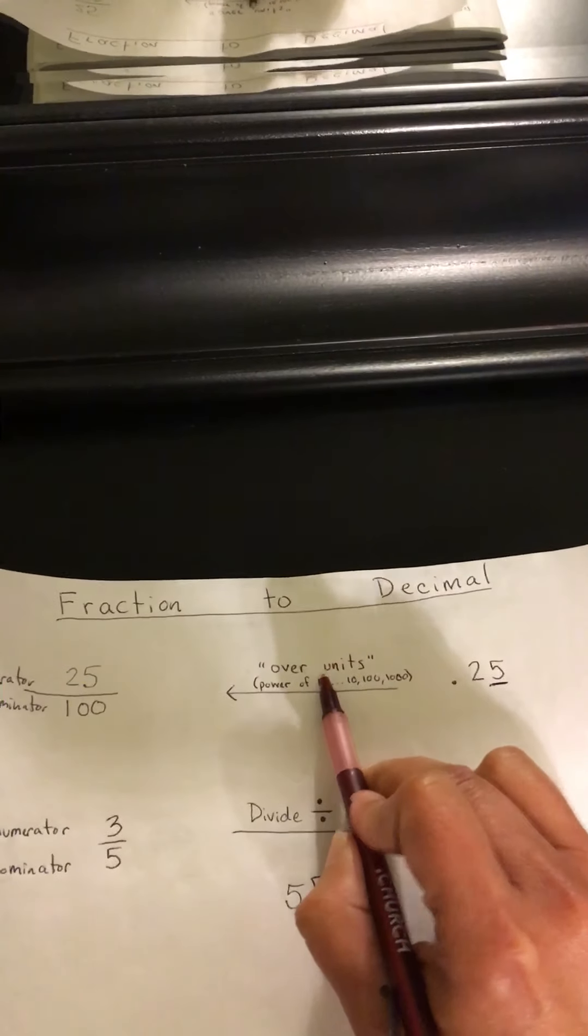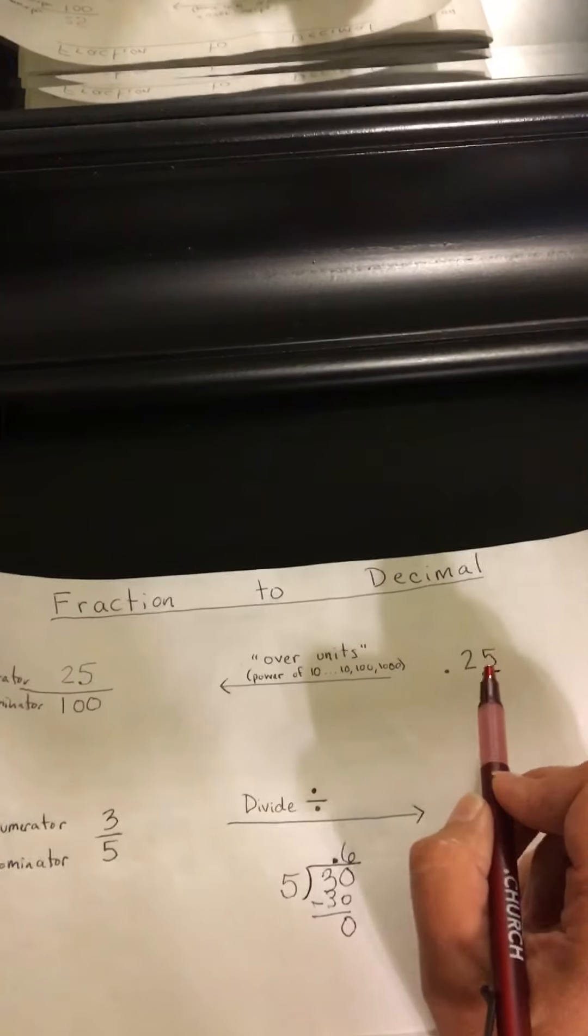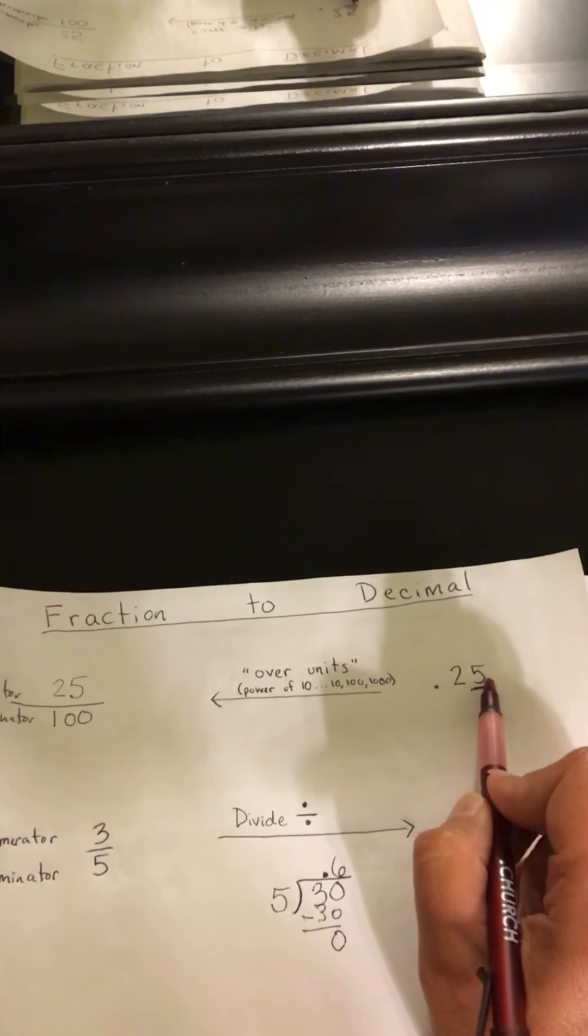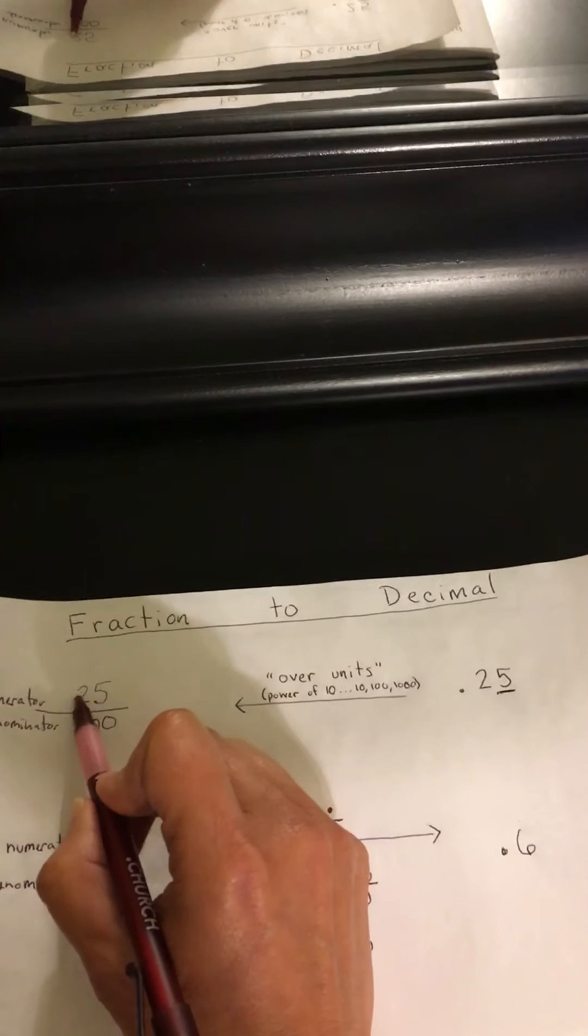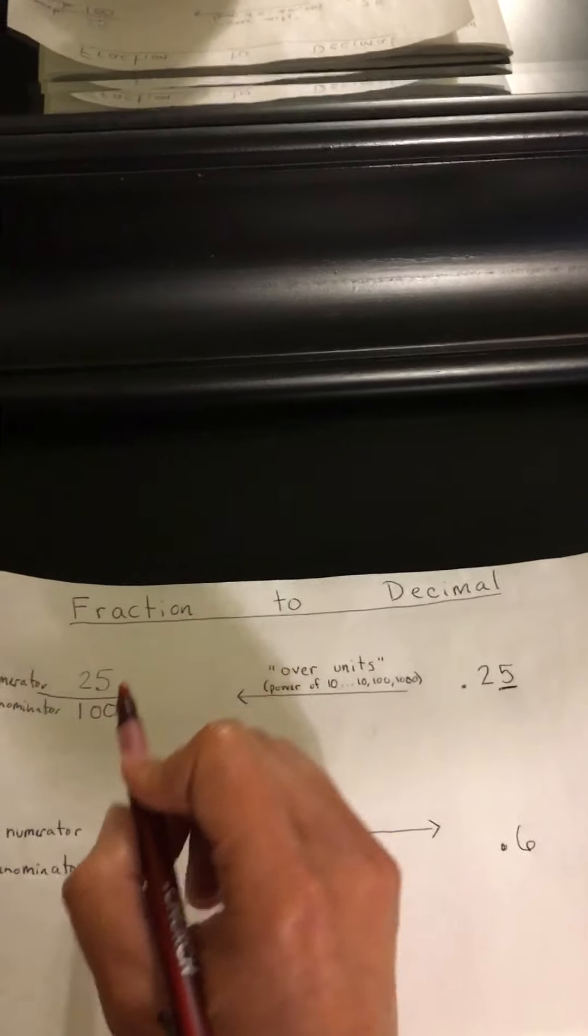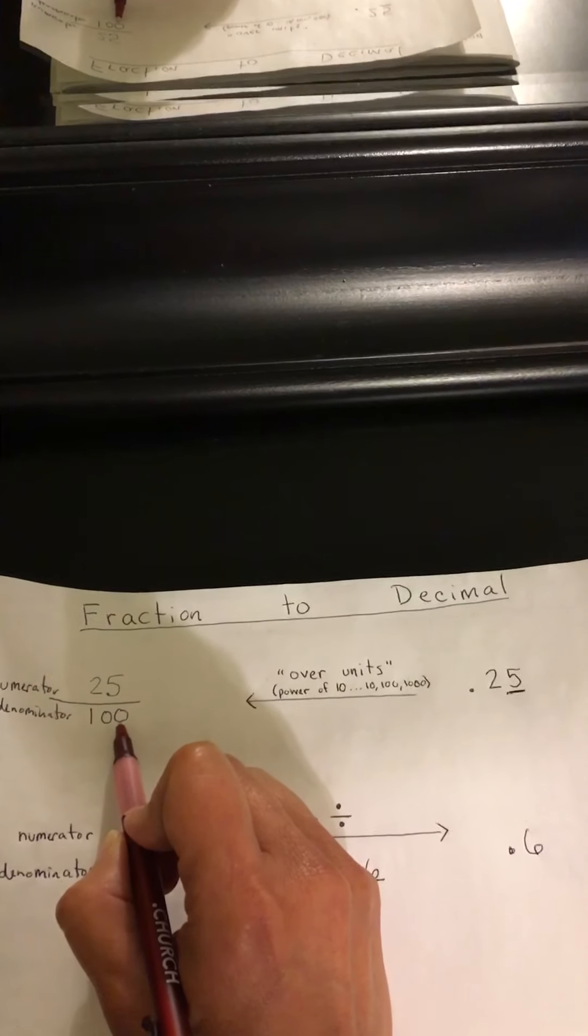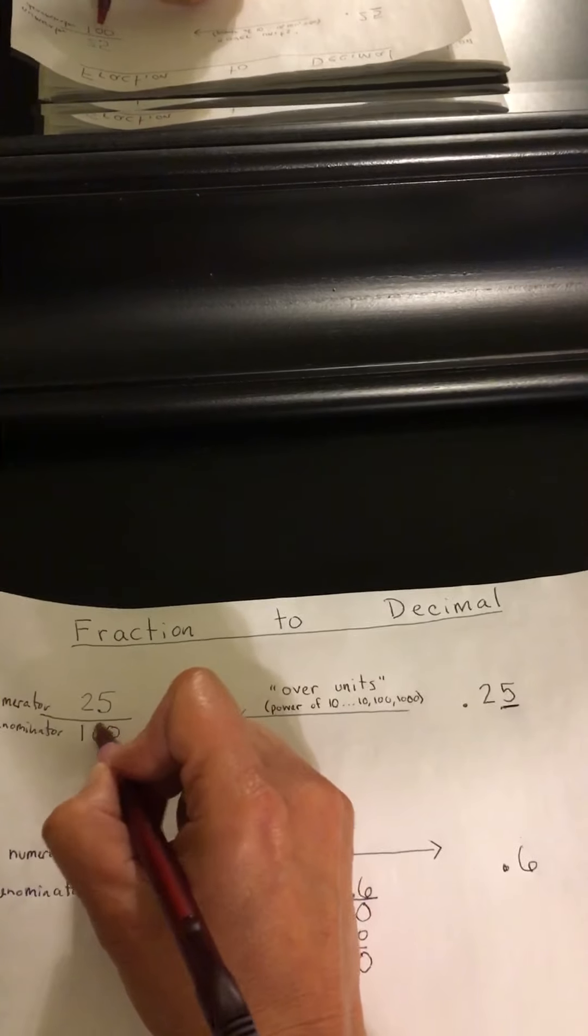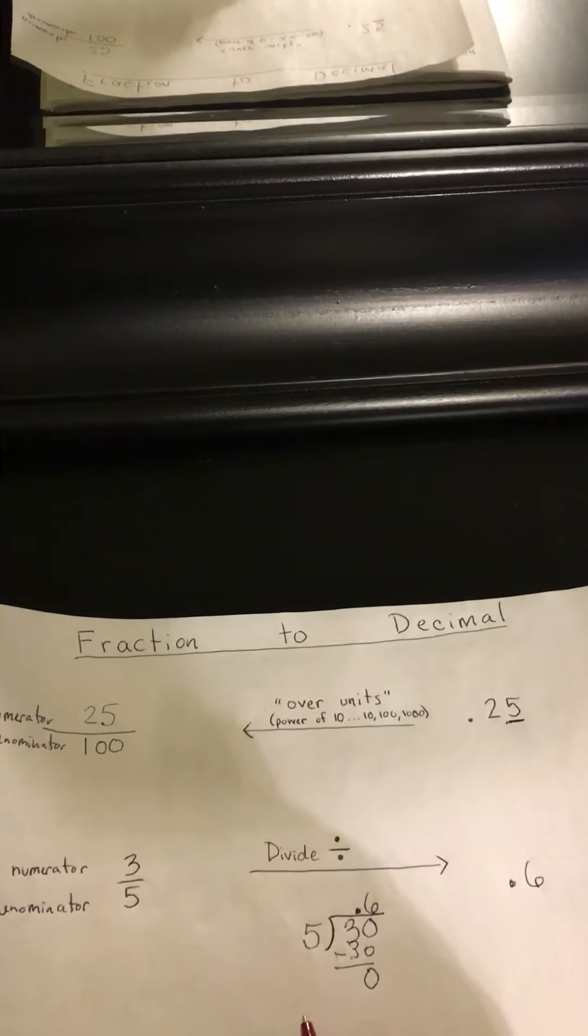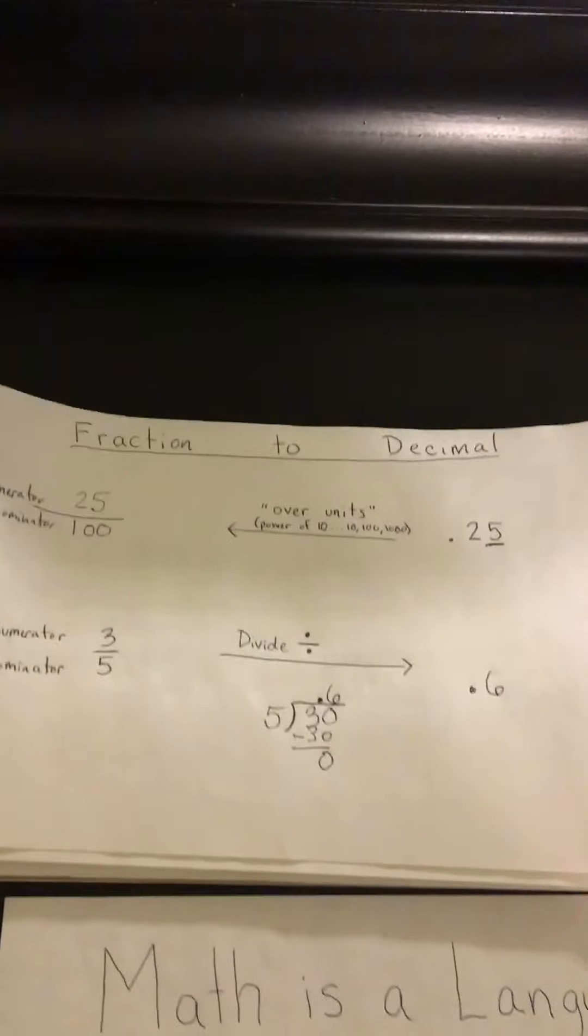So over units conversion from decimal to fraction just means you take whatever is here after the decimal and you put it up on top. And then on the bottom, you put the number of units. So 100 is going to be my units for that. So I'm going to put it in there.